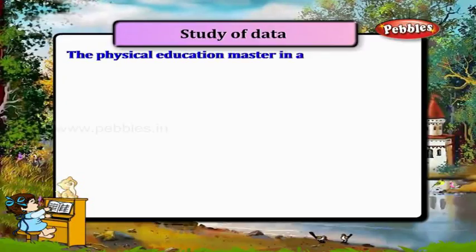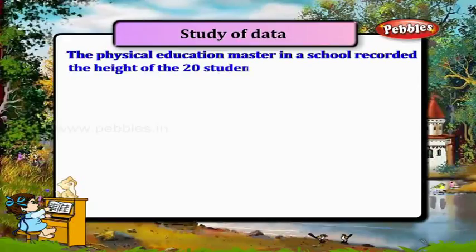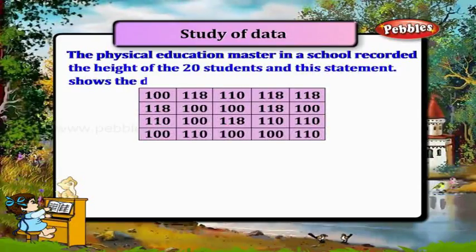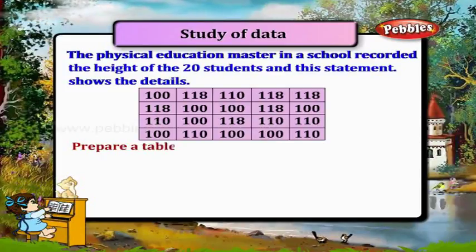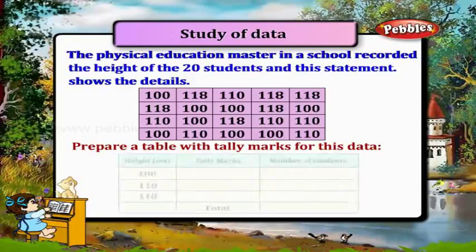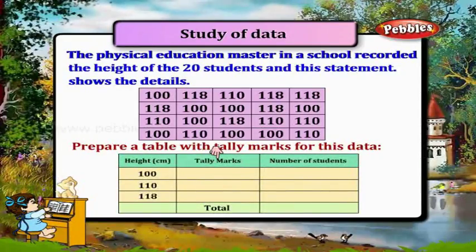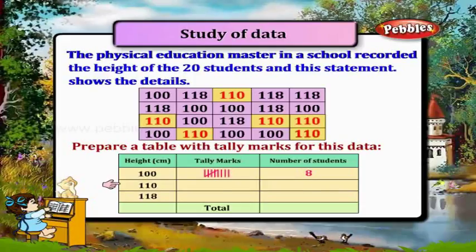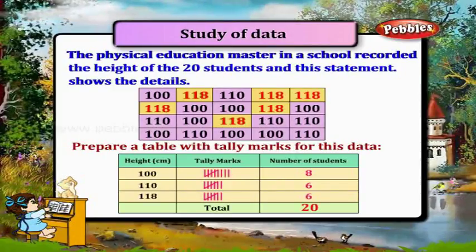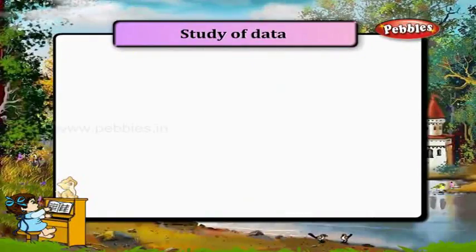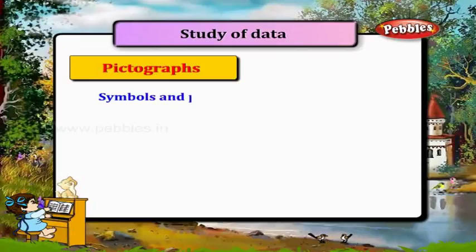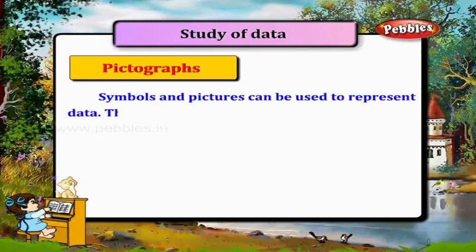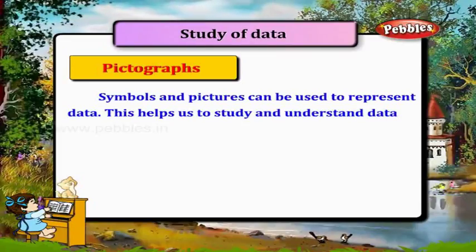The physical education master in a school recorded the height of 20 students. Let us prepare a table with tally marks for this data. Height in centimeters — Tally marks — Number of students. 100 centimeters: 8 students. 110 centimeters: 6 students. 118 centimeters: 6 students. This helps us to study and understand data easily.